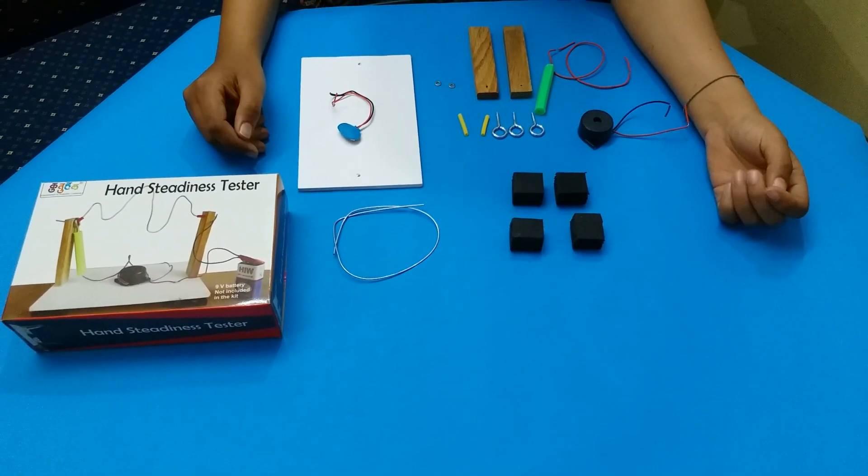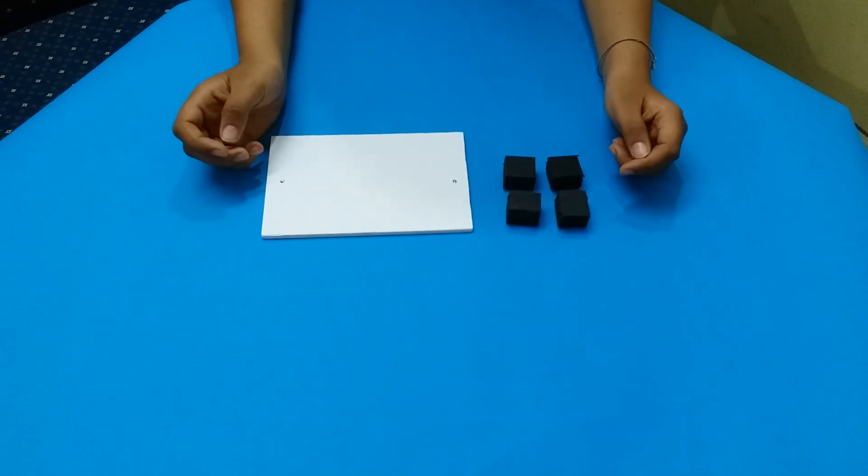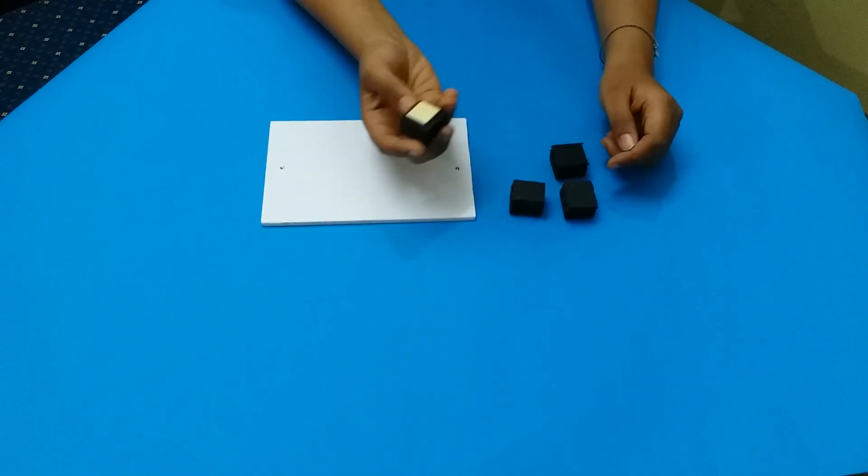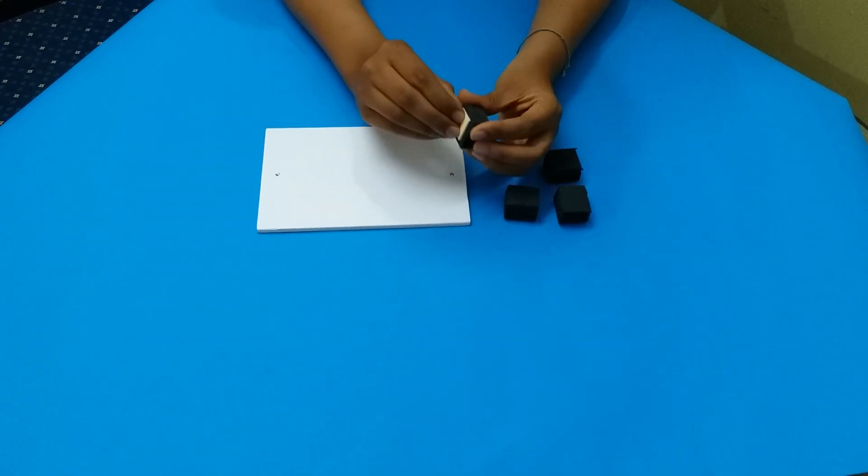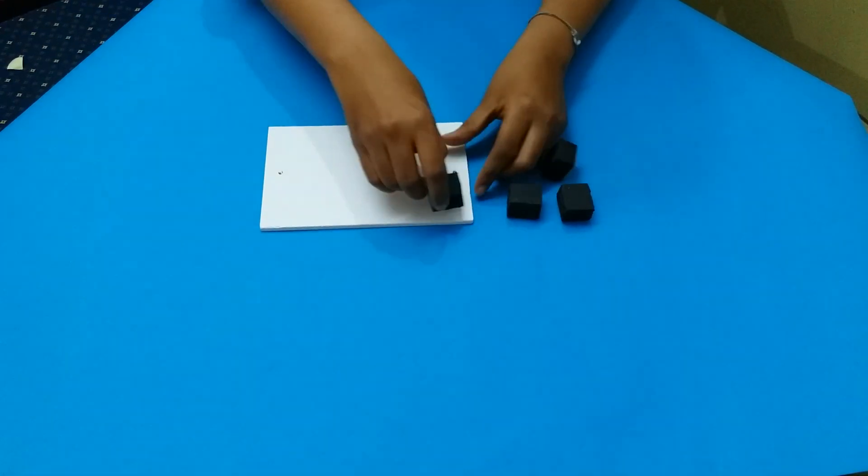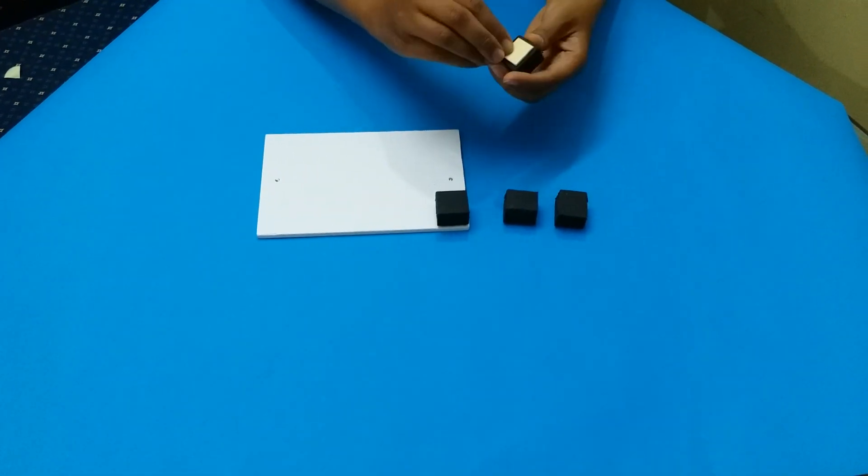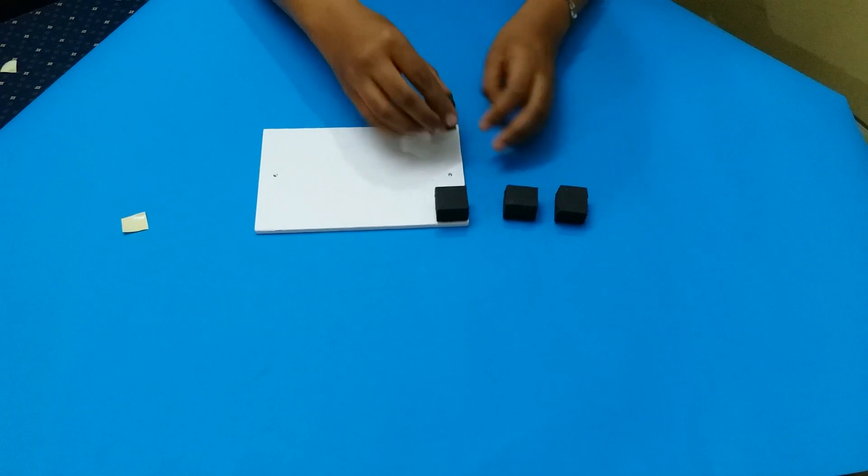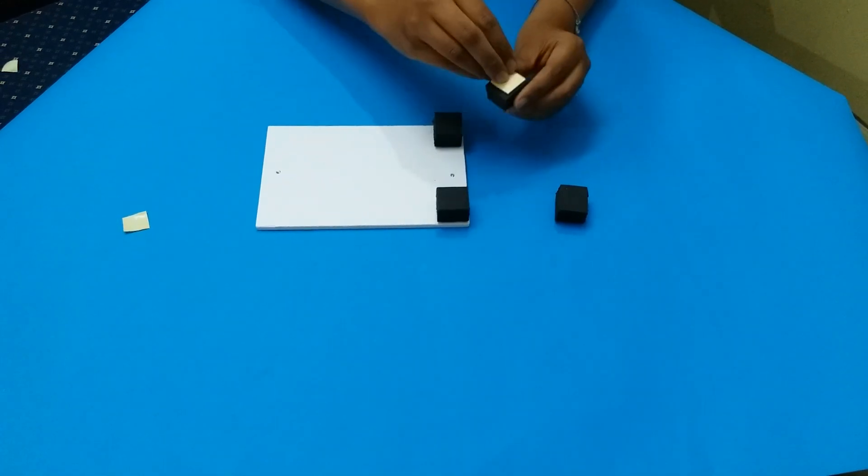In the first step, you have these four foams with both side tape on one side. Remove the release paper and fix these four foams on the four corners of the sunboard that will act as a stand for your project.